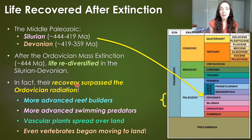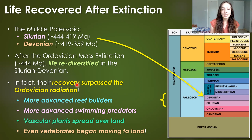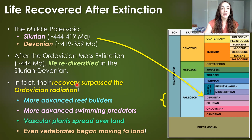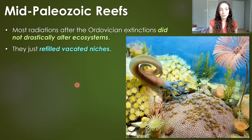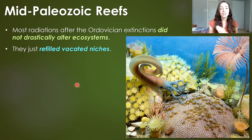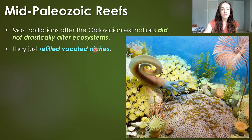This transition to land was pretty significant. But we're going to start with reefs. In terms of the radiations or diversification that happened after the Ordovician extinctions, in the Silurian period they didn't drastically change the ecosystems — they just kind of refilled the empty niches that had been emptied by the extinction event.